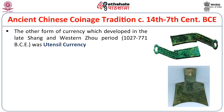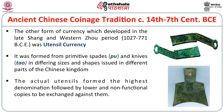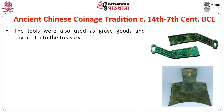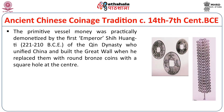Another form of Chinese currency was utensil money. Primitive forms of spades and knives, termed pu and tao in different sizes and shapes, developed in different parts of the Chinese kingdom. Actual utensils formed the highest denomination, followed by smaller non-functional copies exchanged against them. These tools were also used as grave goods and payment into the treasury. Some spades bear inscriptions with the term Peng — meaning a double string of cowries — or Shan, with numerals inscribed on the small spades.